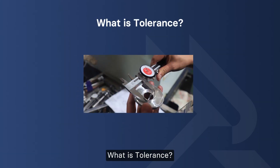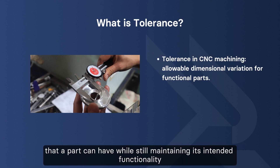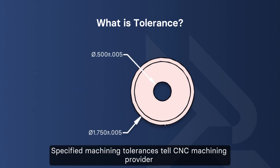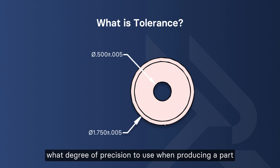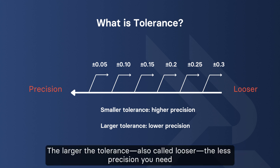What is tolerance? Tolerance in CNC machining refers to the acceptable range of dimensional variations that a part can have while maintaining its intended functionality. It's a critical aspect during both the design and manufacturing phases. Specified machining tolerance tells the machining provider what degree of precision to use when producing a part. The smaller the tolerance — in the manufacturing world this is a tighter tolerance — the more precision required. The larger the tolerance, also called the looser tolerance, the less precision you need.